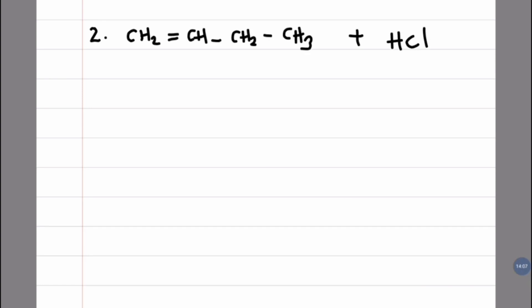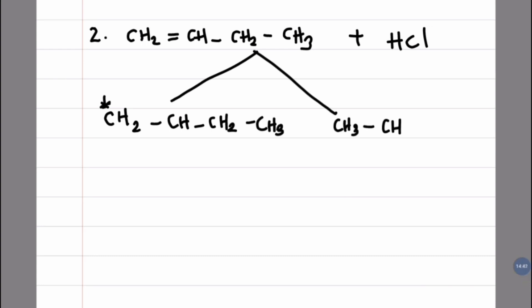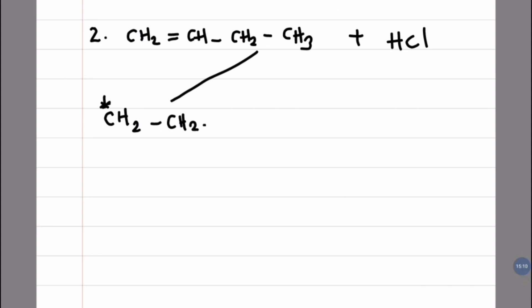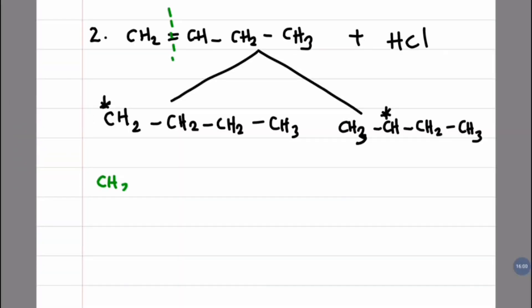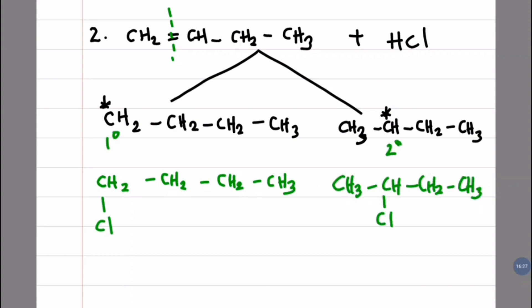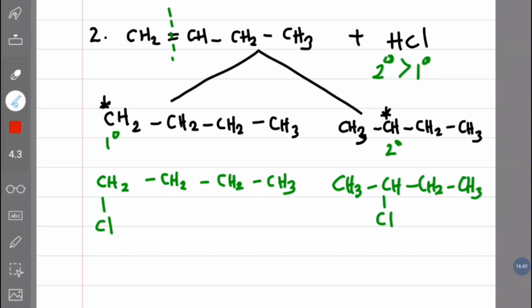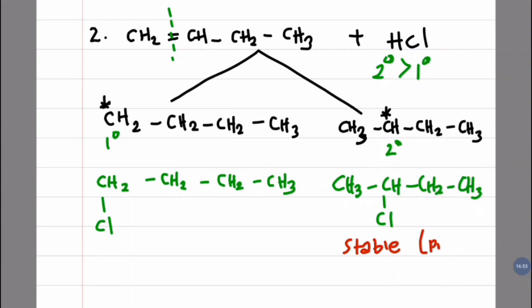The next example is 1-butene plus HCl. The intermediate cations are: first, a primary carbocation, and second, a secondary carbocation. If the double bond is broken, from the stability of the intermediate cations, the secondary carbocation is favored, so 2-chlorobutane is the major product.